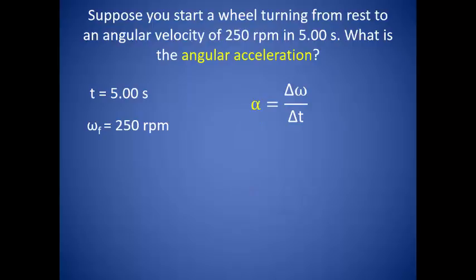Suppose you start a wheel turning from rest to an angular velocity of 250 RPM in 5.00 seconds. What is the angular acceleration? Well, what do we know? We are given time, which is 5 seconds. We also are given the angular velocity as 250 RPM. RPM is revolutions per minute, and that is not the correct calculation unit for our angular velocity.